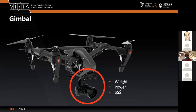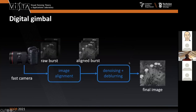Basically what we tried to do is emulate the gimbal entirely digitally. The way it can be done: you can take a fast camera — and by fast I don't mean something that runs at 10,000 frames per second, but something that runs at a few hundred frames per second, which is very standard hardware nowadays. Your cell phone can probably do 240 frames per second without a problem.